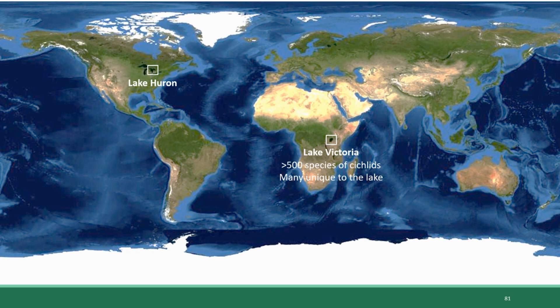Historically, Lake Victoria contained over 500 species of cichlids, which is just a single family of fish native to the lake. In the 1950s, another predatory fish called the Nile perch was introduced to the lake so that humans could fish it as a food source, which led to mass extinction of the cichlids. But prior to this, the lake was extremely biodiverse and contained many unique species not found anywhere else in the world. In contrast, Lake Huron contains only 79 total species of fish, none of which are unique to the lake — they're found in many other lakes in North America. So, relatively similar sized lakes, very different biodiversity.